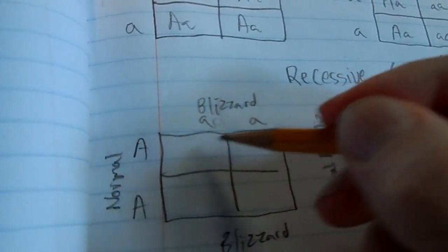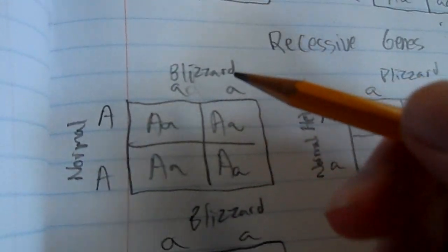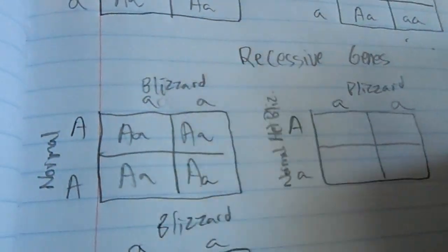So when you bring this one down and this one across, you will get, let me write this down quick. If you pair up a normal to a blizzard, you'll get all normal het blizzard.